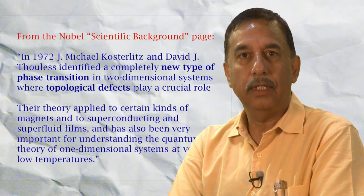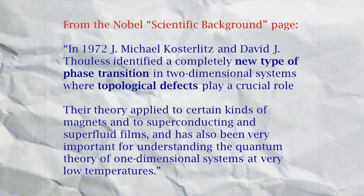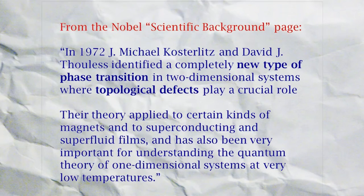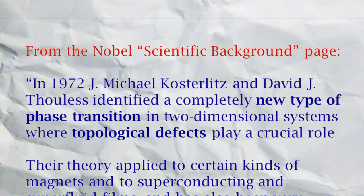The first one is the 1972 paper of David Thouless with Mike Kosterlitz, who identified a completely new type of phase transition in two-dimensional systems where topological defects play a crucial role.